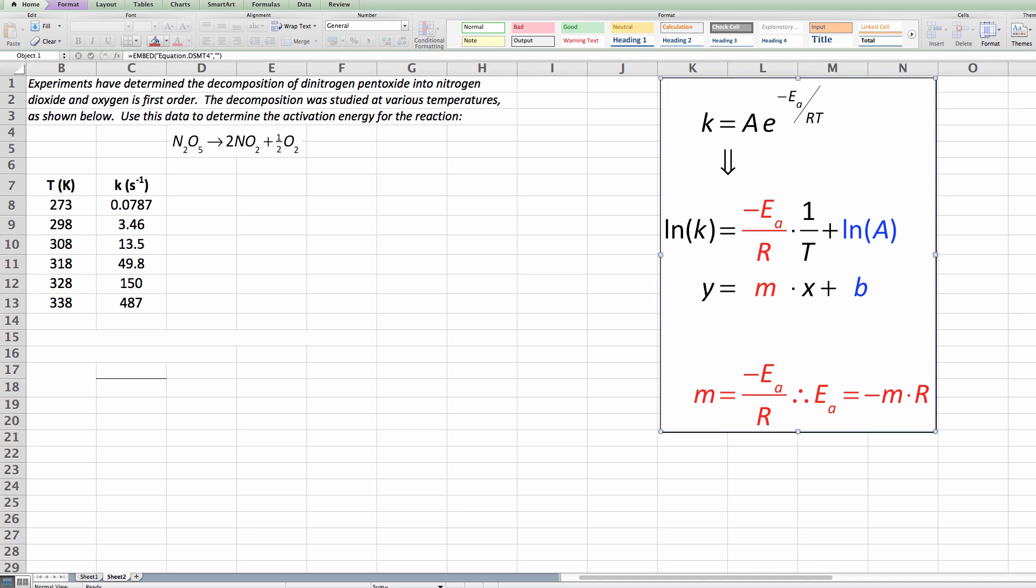Hi chemistry students, let's take a look at a temperature dependence type of problem you might see for chemical kinetics. Essentially what you'd be given in this type of situation is you'd be asked to find maybe the activation energy given some data that includes the temperature that the reactions were run and the rate constant.